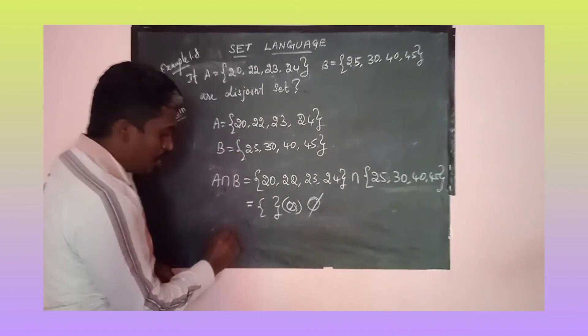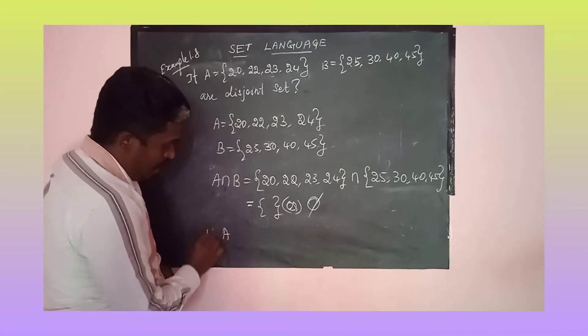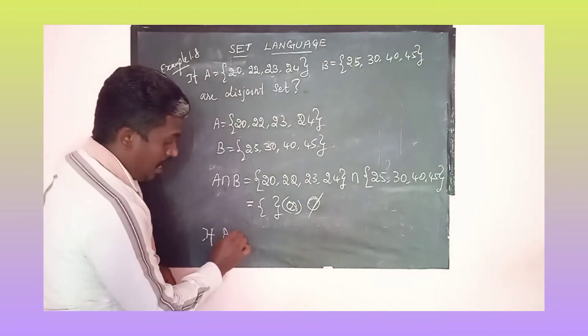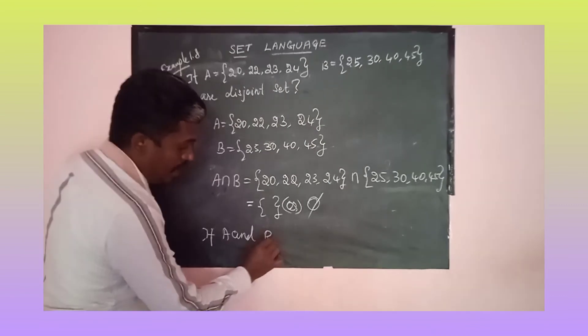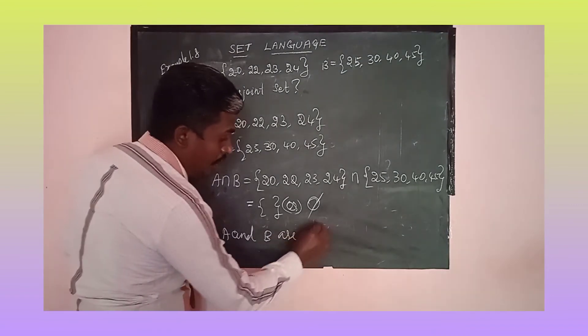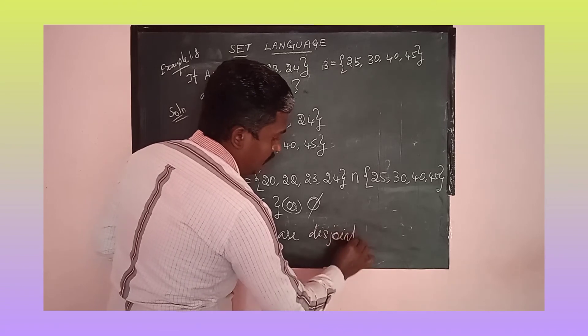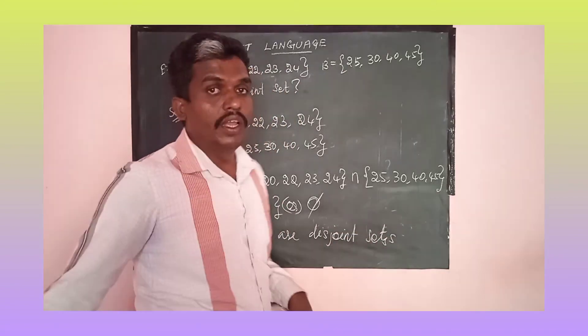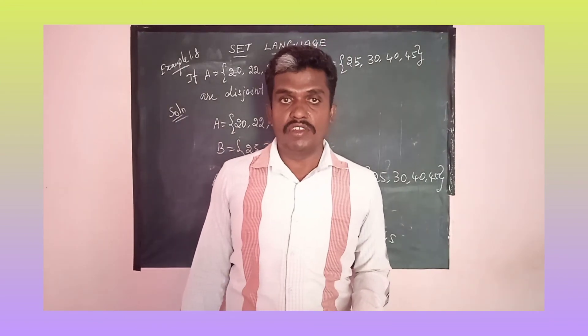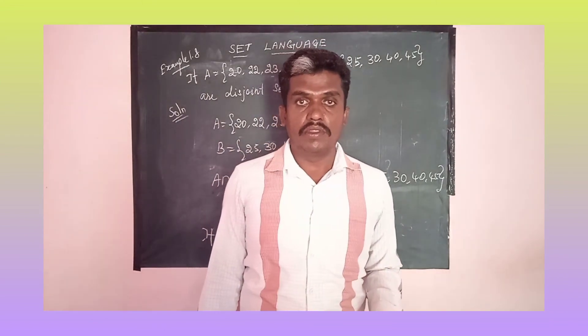Here you should write the answer: A and B are disjoint sets. Do you understand? Thank you.